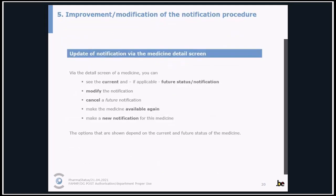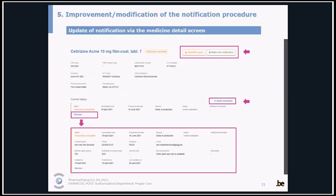Updating a previous notification is possible via the medicine details screen. Via this screen you can easily see the current and future status notifications. You can modify the notification, cancel a future notification, make the medicine available again, or make a new notification for this medicine. The options shown depend on the current and future status of the medicine. If you click on 'show more,' you will see more information about the notification you made earlier, and you can easily modify it, make the medicine available again, or make a new notification.